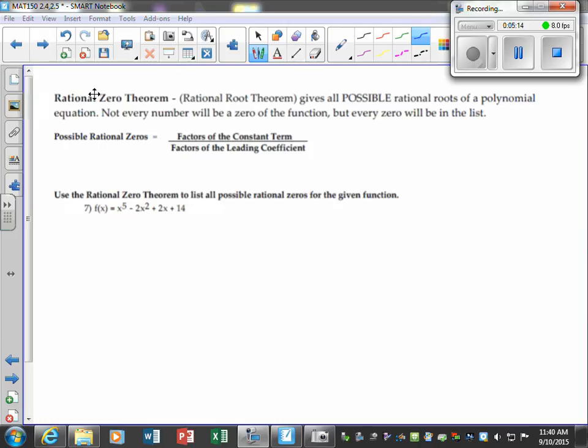The next theorem we're going to introduce is your rational zero theorem or rational root theorem. It gives you all the possible rational roots of a polynomial equation. But not every number will be a zero, but every zero will be in the list. And that's confusing. In just a minute, I'll see if I can make some sense of that for you. The idea is we take the factors of the constant term and divide it by the factors of the leading coefficient.